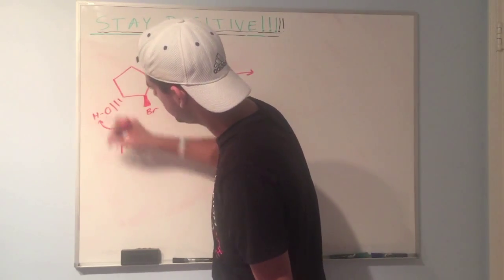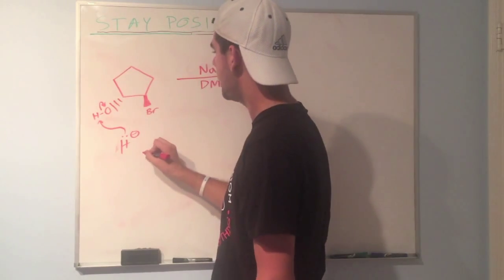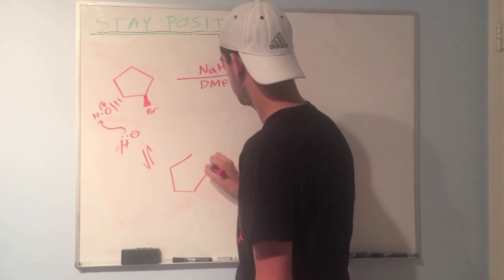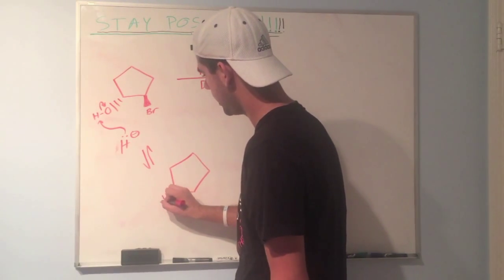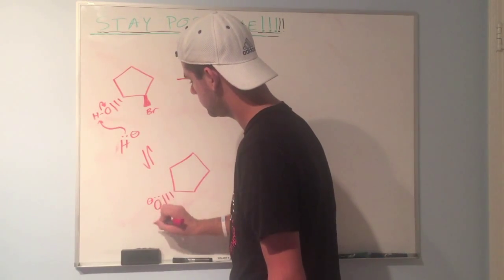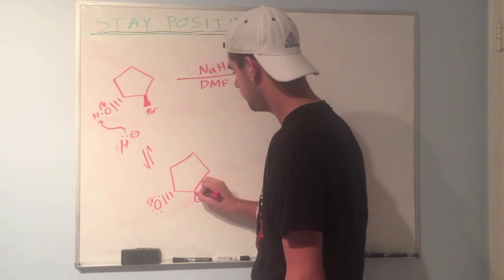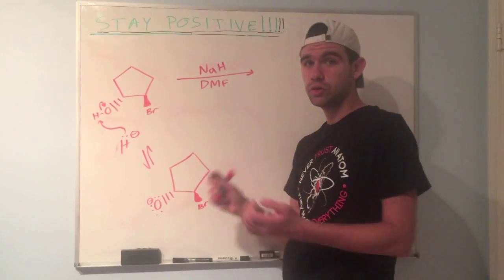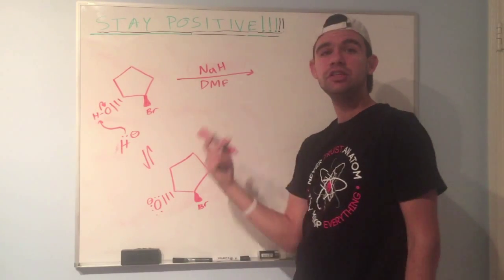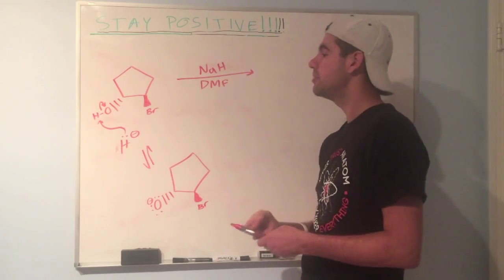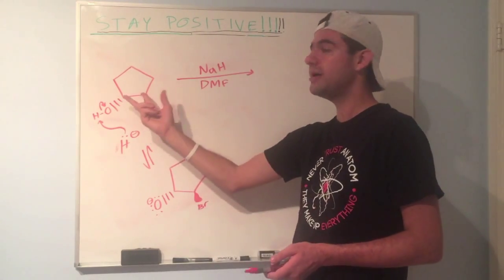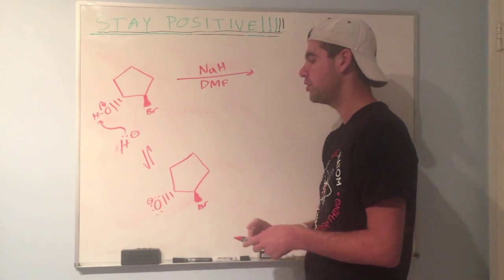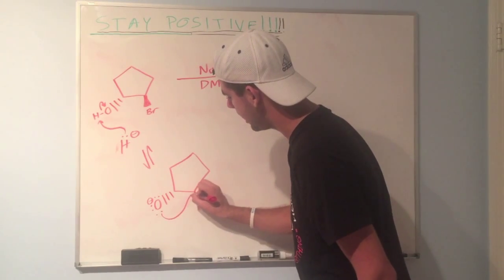It's going to deprotonate this hydrogen right here. Send those electrons off to oxygen. And now we've created a good nucleophile. So now we have O minus and we have our Br here. And remember intramolecular reactions happen typically faster than intermolecular reactions. So the major product will be the intramolecular because they're spatially closer together.